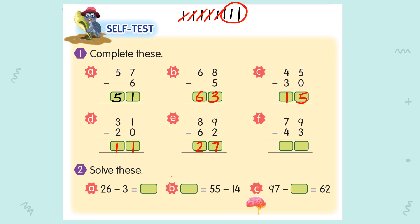For F: 79 minus 43. 9 minus 3 equals 6. 7 minus 4 equals 3. So your answer is 36.